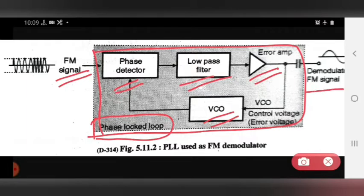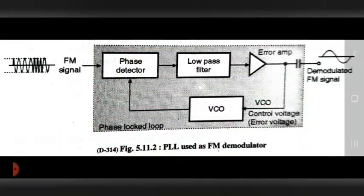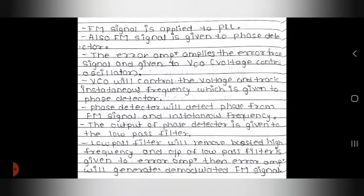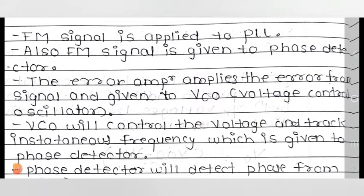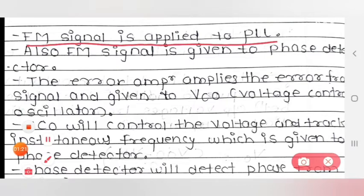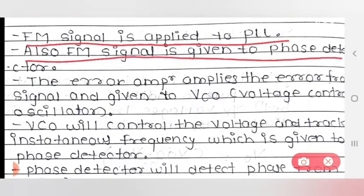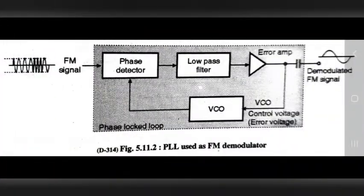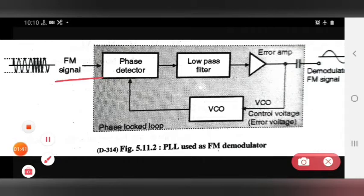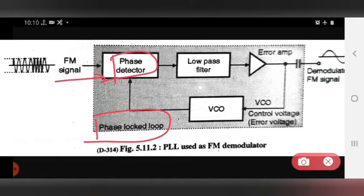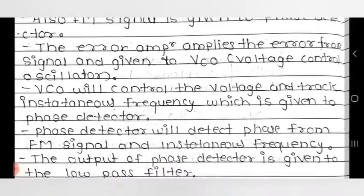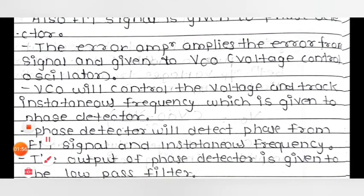The first point in the detailed description of PLL used as FM demodulator: the FM signal is applied to the PLL. As seen in the diagram, the FM signal is given to the phase detector, and also given to the phase-locked loop overall.